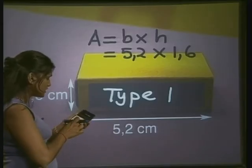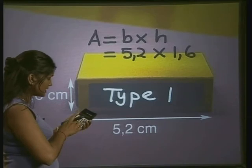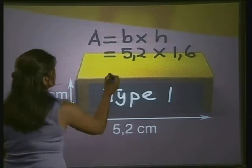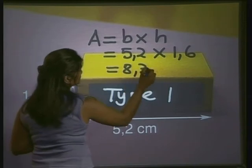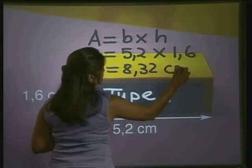5.2 multiplied by 1.6 gives us 8.32 centimeters squared.